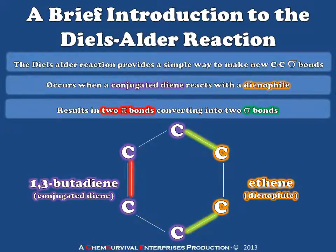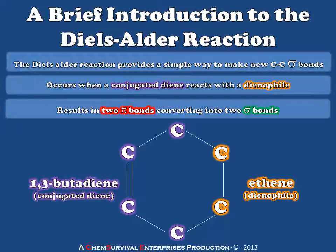Two of my pi bonds have now become sigma bonds, and at this point I've got a cyclohexene molecule. Entropically, joining two molecules to form one is a very disfavored proposition. However, from an enthalpic perspective, creating two sigma bonds out of two pi bonds creates an enormous amount of energy. So this Diels-Alder reaction is highly favored from an enthalpic perspective, and that's actually what drives it forward.